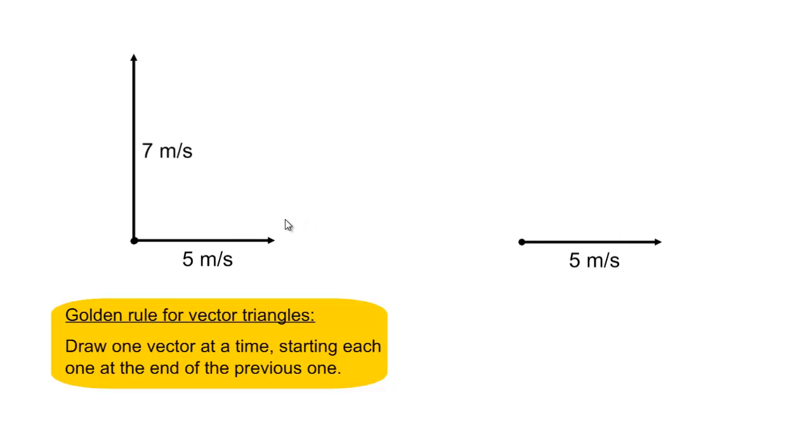Now, we need to draw the next vector, starting it at the end of the previous one. So we end up forming a vector triangle. This is very important. The arrows must chain up so they are continuously going along.